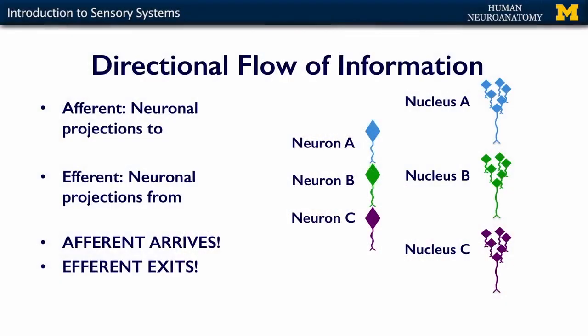In this lecture, we're going to begin talking about sensory systems, and I just want to remind you about the basic flow of information. Afferent is neuronal projections to, and we think about sensory when we're thinking about afferent. Efferent is neuronal projections from, and we mostly think about motor information when talking about efferent. So remember: afferent arrives, and efferent exits.